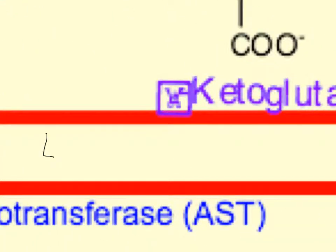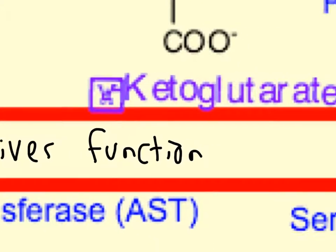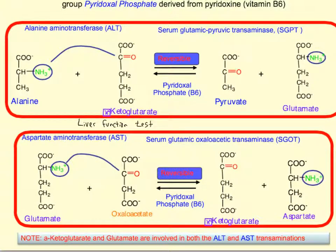The liver function test is somewhat of a misnomer, because you're not testing the function of the liver — you're testing its dysfunction. When you test for these enzymes, you're asking whether an enzyme that should be inside the liver is found in the blood. If it is, it shows that liver cells are dying and these enzymes are spilling out of the dying cells. Higher amounts indicate dysfunction in the liver.